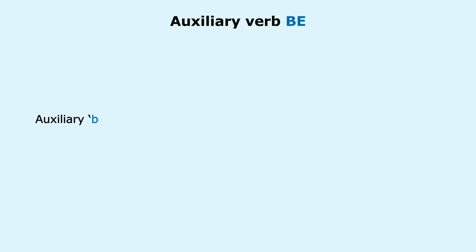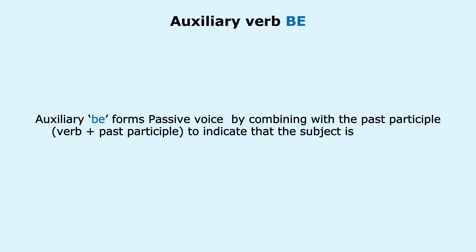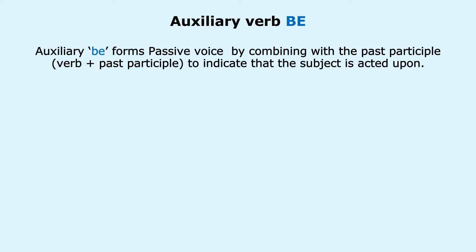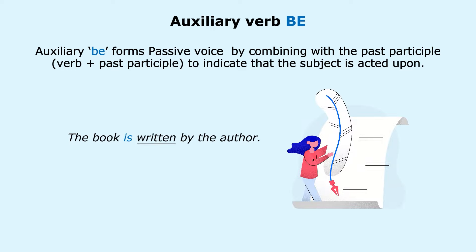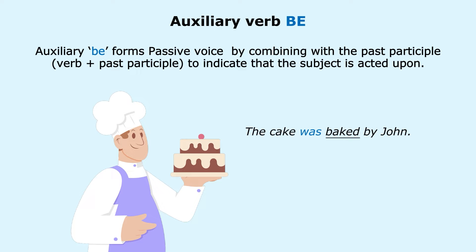Auxiliary Be forms the passive voice by combining with the past participle to indicate that the subject is acted upon. For example: 'The book is written by the author' (present passive); 'The cake was baked by John' (past passive).